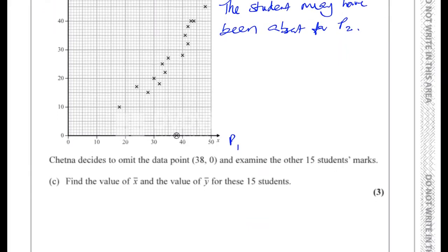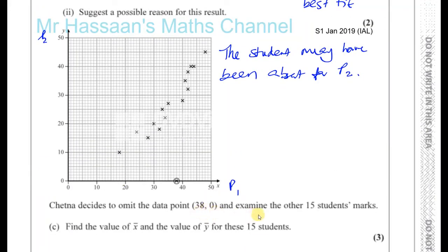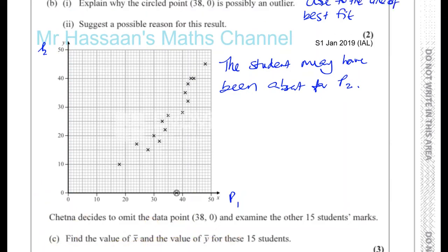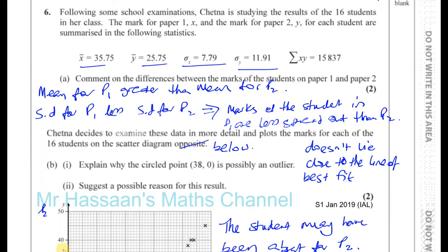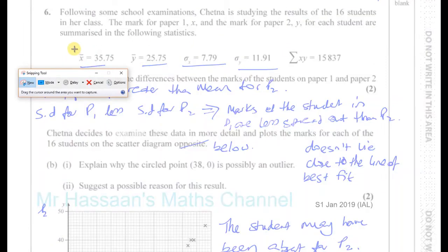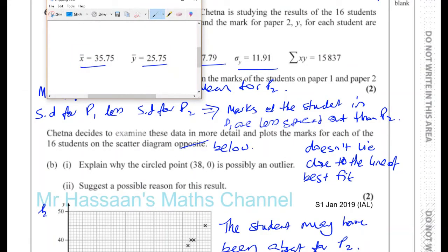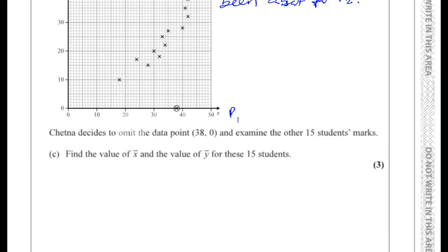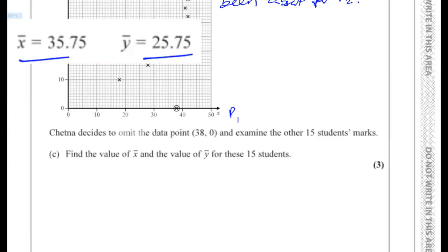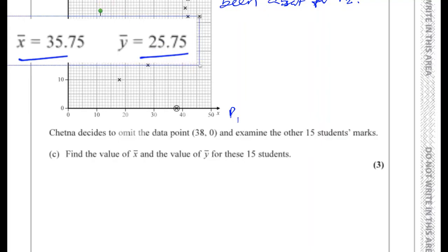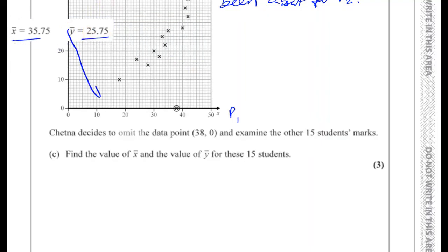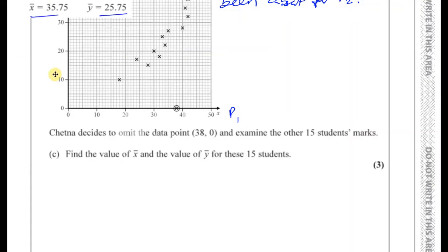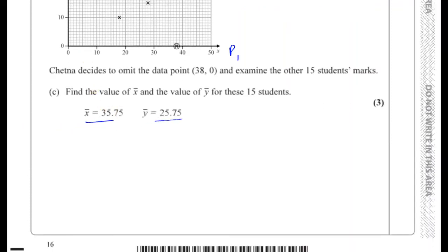Then it says Chetna decides to omit the data point 38, 0 and examine the other 15 students' marks. Find the value of x bar and the value of y bar for these 15 students. So let's just take this information from up here. That's for 16 students.